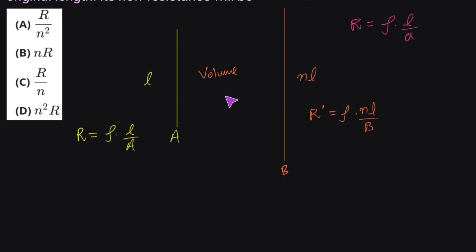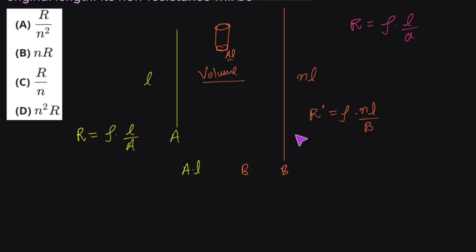Now we need to establish the relationship between the areas of cross-section a and b, using the volume formula. The volume of a cylinder is area of base times height. So the volume of the original wire is a times l, and the volume of the stretched wire is b times nl. Setting these equal: a·l = b·nl, so a upon b equals n.